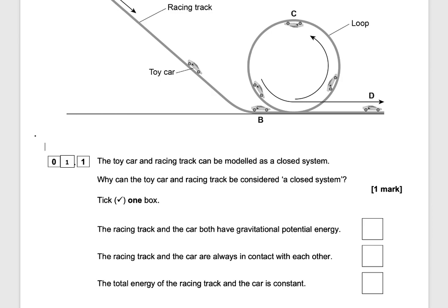The racing track and the car are always in contact with each other — this is not necessarily true because if the car is going at a fast speed, sometimes they can lose contact with the loop. And being in contact doesn't mean it's a closed system. The answer is the total energy of the racing track and the car is constant, because at a constant energy supply the energy is conserved, meaning it's a closed system where energy can't escape or enter.